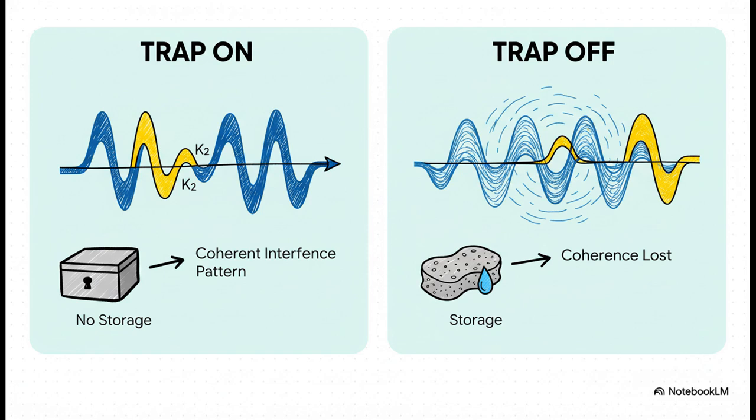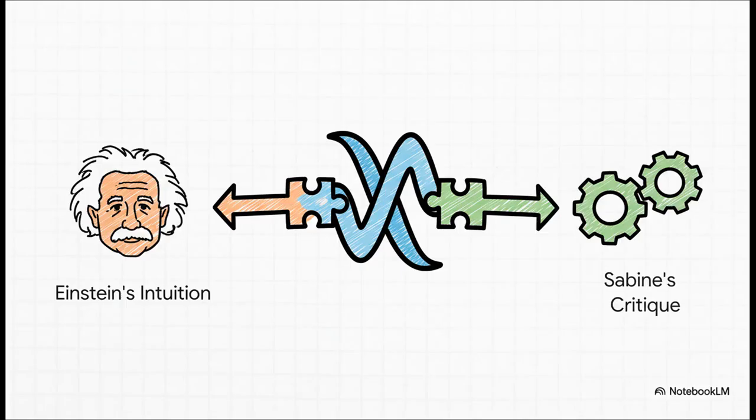See? It's not some abstract information that's killing it. It's a physical detuning of the whole system. And here's the really cool part. This explanation lines up perfectly with Einstein's physical intuition. It's the real physical interaction with the lattice that's doing the work. And it also lines up perfectly with Sabine's critique. It totally avoids that circular logic about information and instead points to a concrete physical cause. A change in the wave structure of the environment itself.